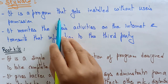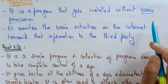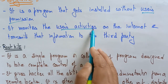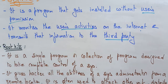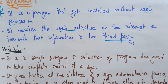Now, spyware. Spyware is a program that gets installed without the user's permission, similar to worms where no human assistance is involved. It monitors the user's activities on the internet and transmits that information to a third party. That's why it's called spyware — it keeps an eye on your data, including account details, passwords, and KYC information, and sends everything to a third party.